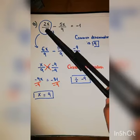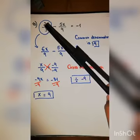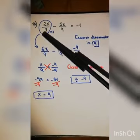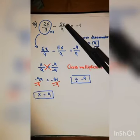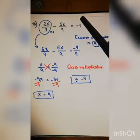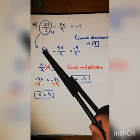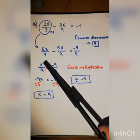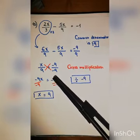To fix the first fraction, multiply numerator and denominator by three: three times three equals nine, and two x times three equals six x. After fixing, we have six x over nine minus five x over nine equals negative nine over nine. Then six x minus five x equals x over nine, which equals negative nine over nine.